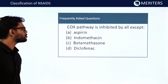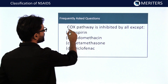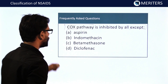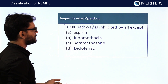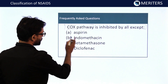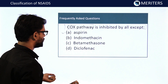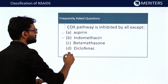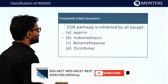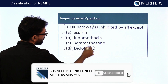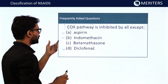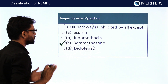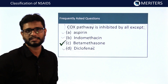The next question: the COX pathway is inhibited by all except which one? The keyword is COX cyclooxygenase pathway, asking for the exception. Aspirin is a non-selective COX-1 and COX-2 inhibitor. Indomethacin is also an NSAID. Diclofenac is also an NSAID. However, betamethasone is not a COX pathway inhibitor — it works via a different mechanism. Therefore, the answer is betamethasone.